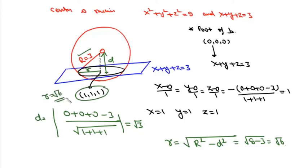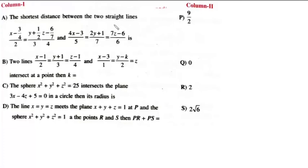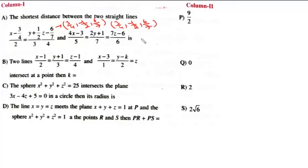Now for match-the-column questions: For the shortest distance between two straight lines — if both lines have the same point (3/4, −1/2, 6/7), then the two lines intersect and their shortest distance is 0, so option A matches with Q.